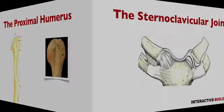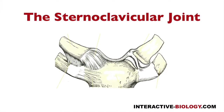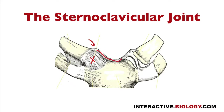Then we spoke about the sternoclavicular joint and the ligaments involved. We have the anterior sternoclavicular ligament and the posterior sternoclavicular ligament. We also have the interclavicular ligament and the costoclavicular ligament.